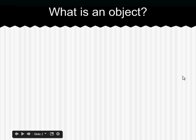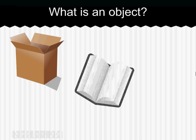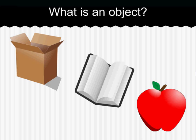So, first of all, what is an object? Well, objects are things like boxes and books and apples. We use them in programming to represent real-world things and understand them and make them work as code.